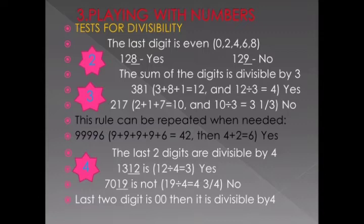Divisibility of 3: suppose there is a number 381 — you have to add all the digits. 3 plus 8 plus 1 gives you 12. Now 12 is divisible by 3, so the whole number 381 is divisible by 3. For the second number 217, you add 2 plus 1 plus 7 which gives you 10. Now 10 is not divisible by 3, so the whole number 217 is not divisible by 3.